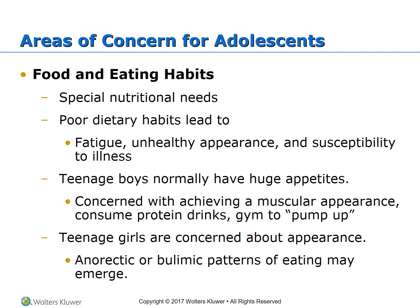Food and eating habits: adolescents have special nutritional needs. They have poor dietary habits that can lead to fatigue, unhealthy appearance, and susceptibility to illness such as diabetes. Teenage boys normally have a large appetite and are concerned with achieving a muscular appearance, so they consume a lot of protein drinks and go to the gym. Teenage girls are also concerned about their appearance and may become anorexic or bulimic. Eating disorders can emerge during this stage and can occur in both males and females.